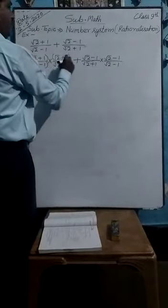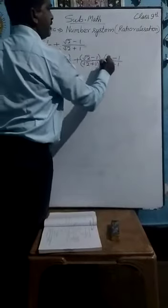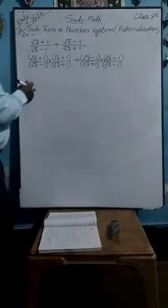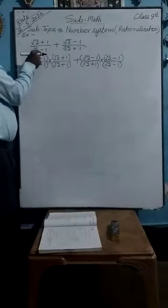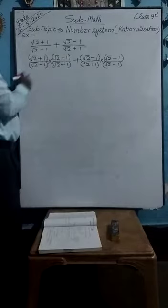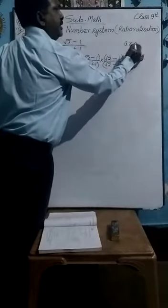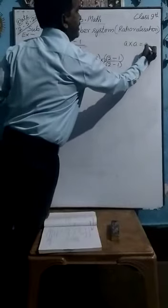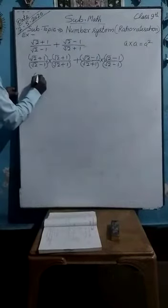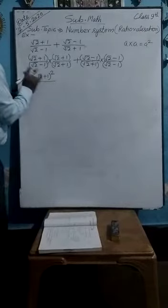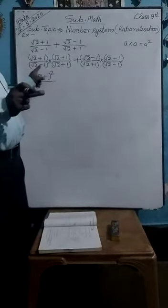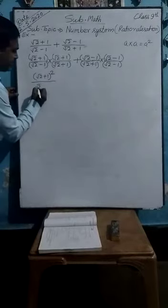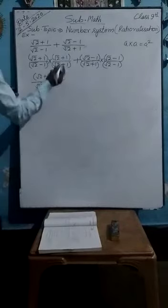And the next one: under root 2 minus 1 upon under root 2 plus 1, multiply here by under root 2 minus 1 upon under root 2 minus 1. This rationalization of each part separately you have to do for the solution. Now, in the numerator the brackets are the same — under root 2 plus 1 and under root 2 plus 1 — same value, same symbol. Then you know that if both are same and in multiplication, it can be written as a square. The bracket can be written in square form. Now use the formula a plus b, a minus b, giving under root 2 square minus 1 square.